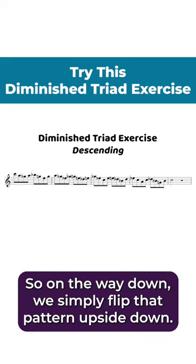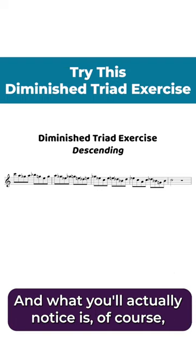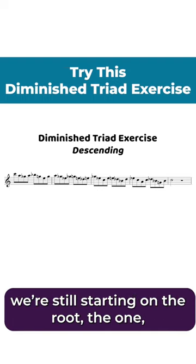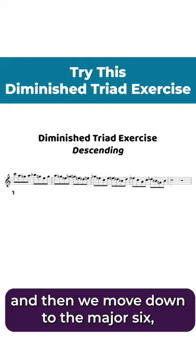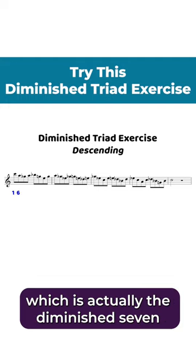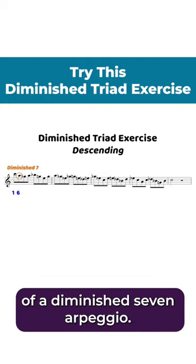On the way down, we simply flip that pattern upside down. What you'll notice is we're still starting on the root — the 1 — and then we move down to the major 6, which is actually the diminished 7 of a diminished...